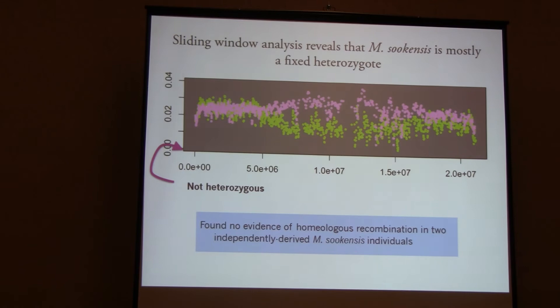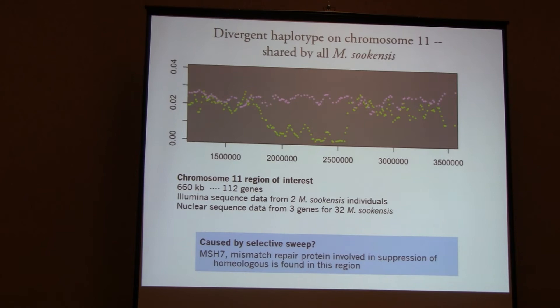I did find one really interesting thing: one region that represents a divergent haplotype shared among all Mimulus suquensis. There's one interesting gene in there involved in the suppression of homeologous recombination that affects fertility in barley — MSH7, which is a plant-specific mismatch repair protein. I'm intrigued by this but won't talk more about it today.